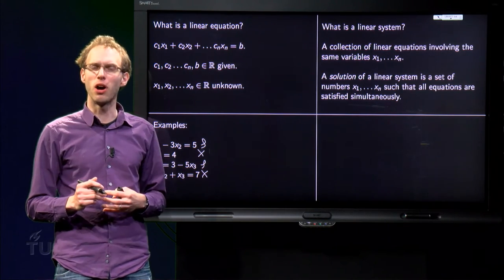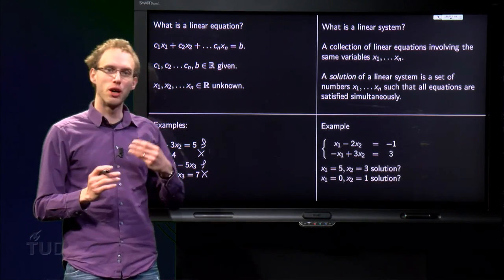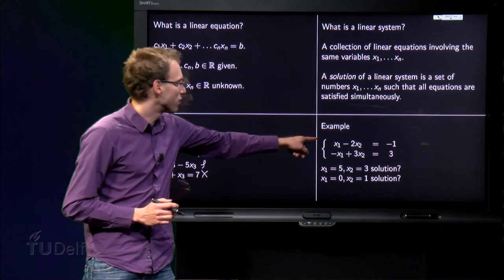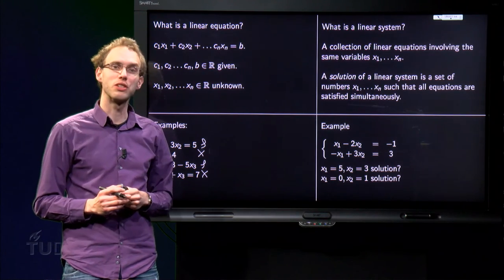Well, it seems hard at first. Let us look at a small example. An example of two linear equations in two unknowns. X1 minus 2 X2 equals minus 1, and minus X1 plus 3 X2 equals 3.